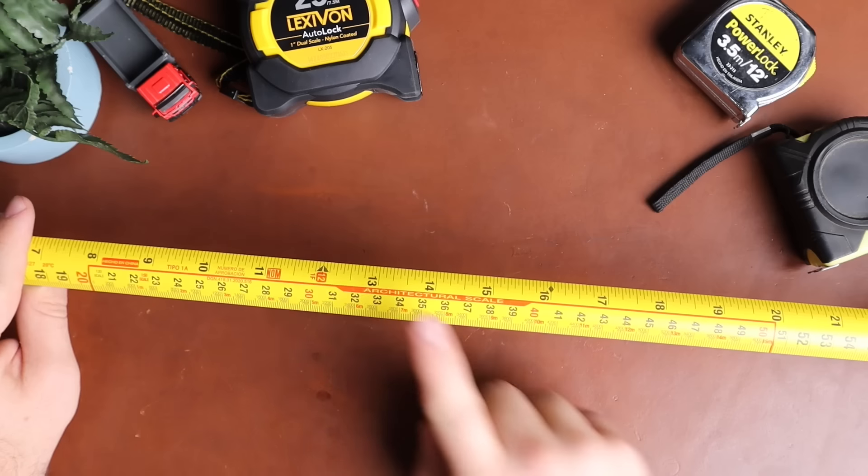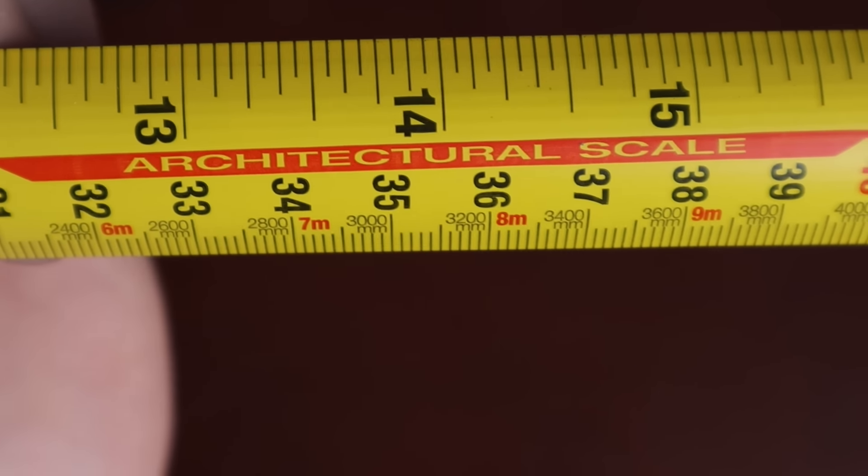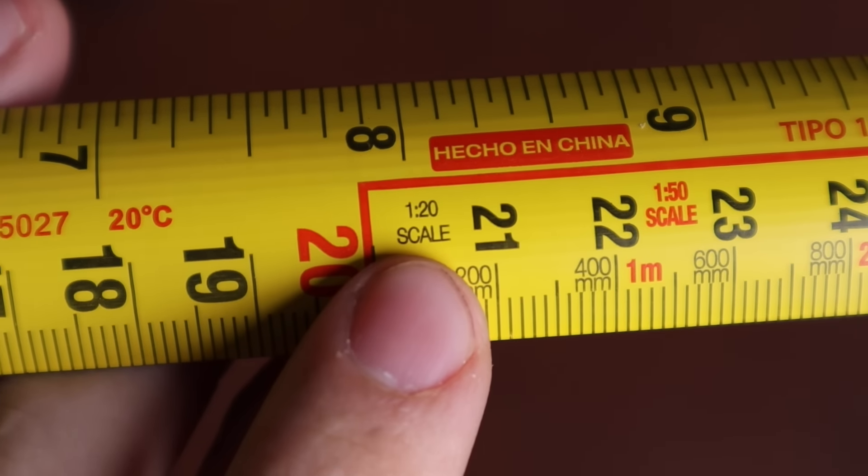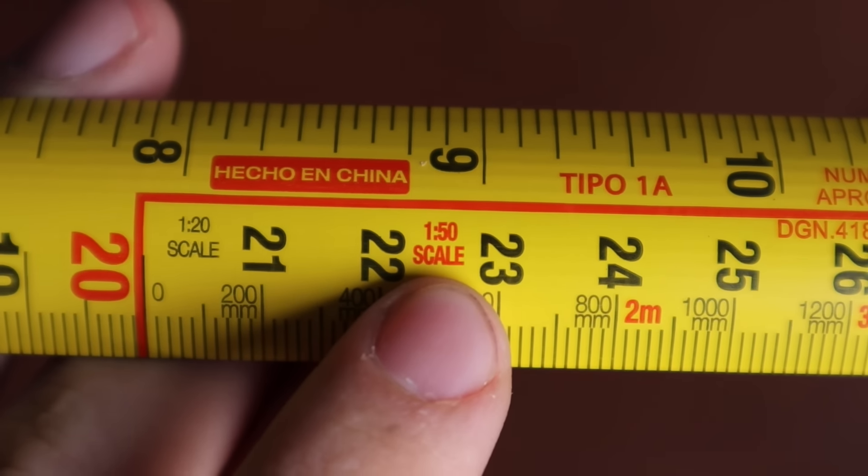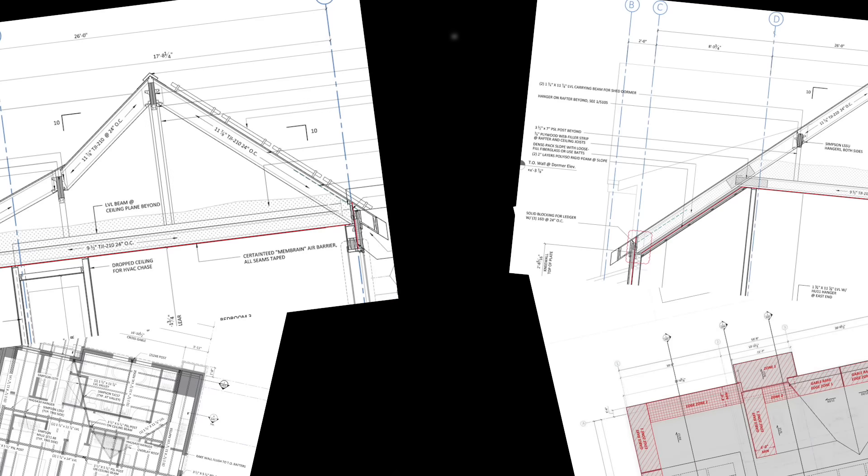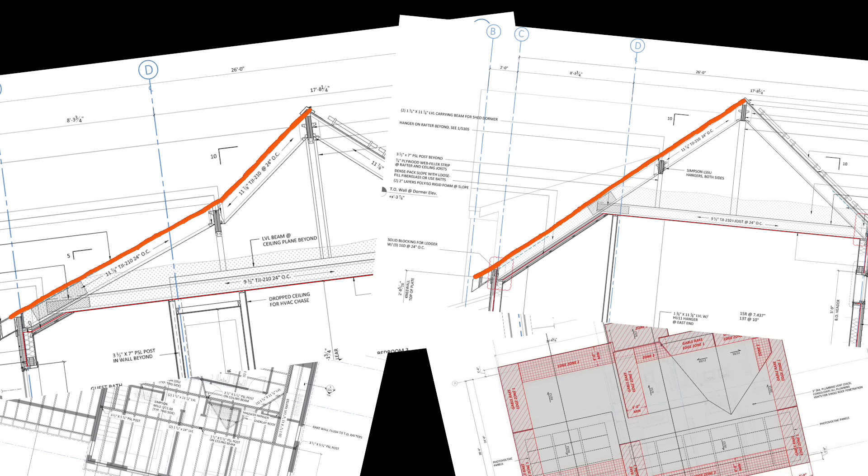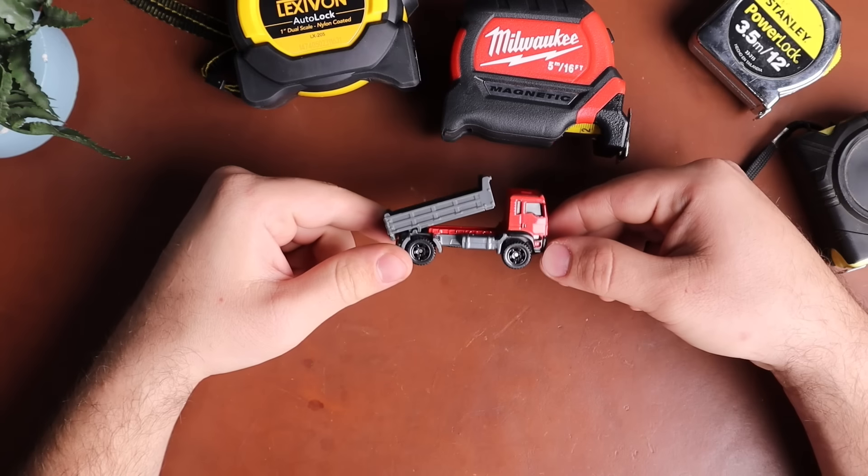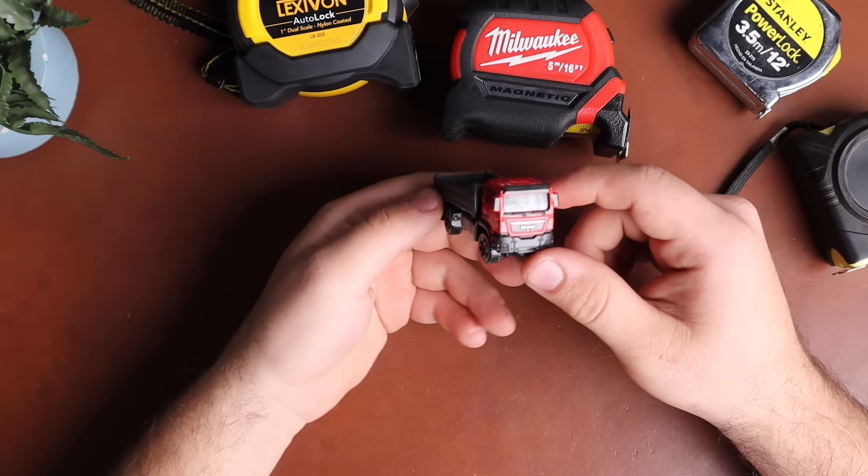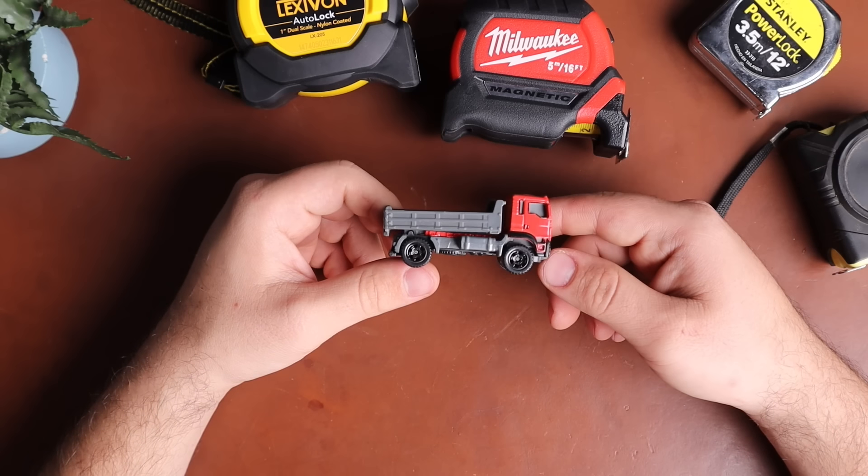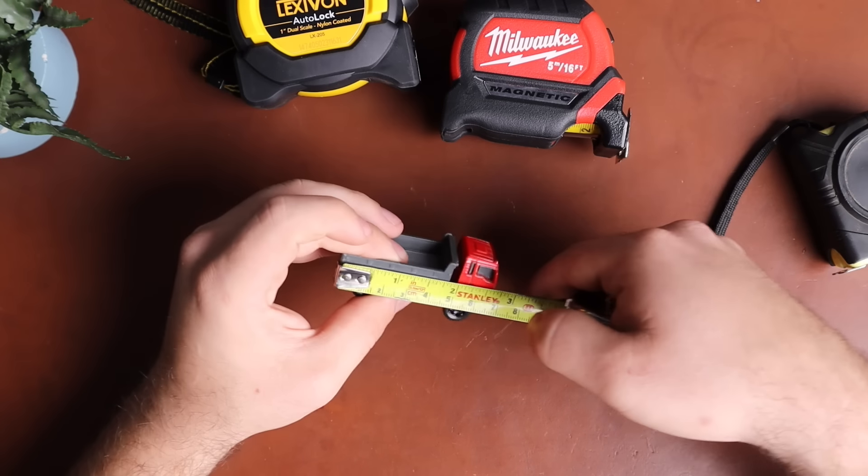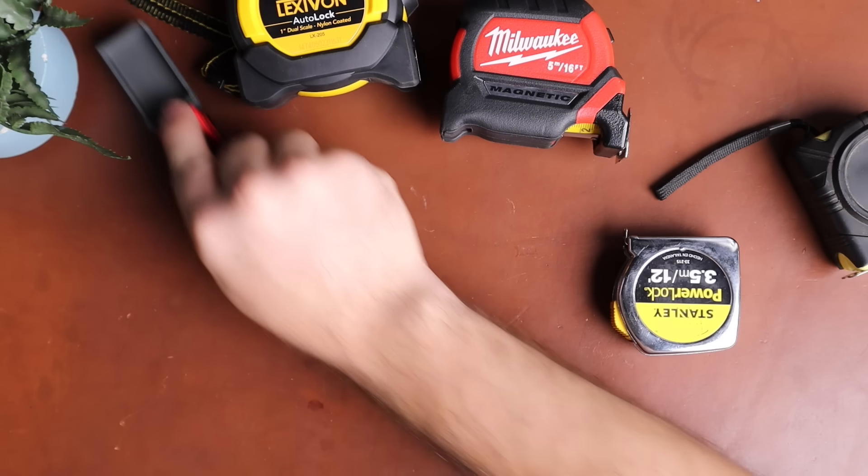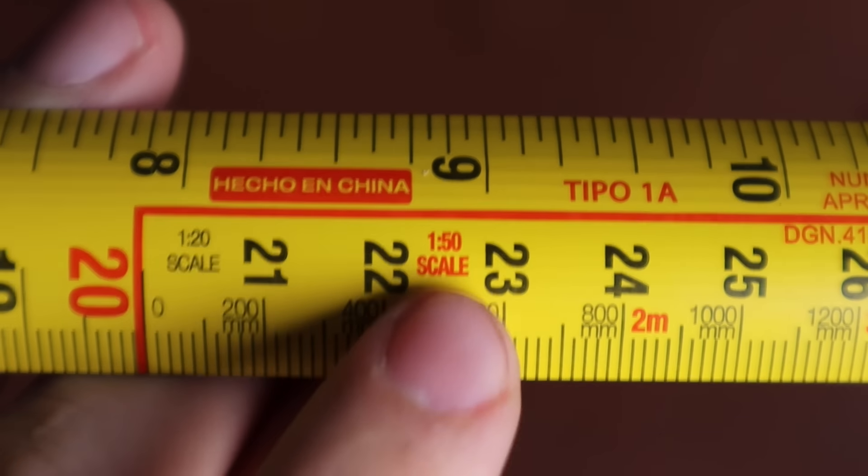Some tape measures will have an architectural scale. These are simply just scaled down measurements to find the equivalent life-size value. So in this case, we have a 1:20 scale and a 1:50 scale. This is usually used for architectural plans, though we have another example most people could probably relate to a little better. Hot Wheels. These little cars are scaled down to 1:64, meaning that if we multiply any of the dimensions of the car by 64, we should get a life-size value of what it would be. Now we don't have a 1:64 scale, we have a 1:50 scale.